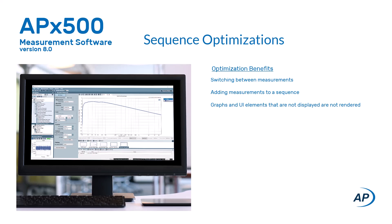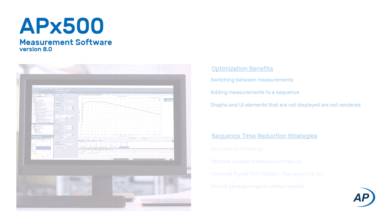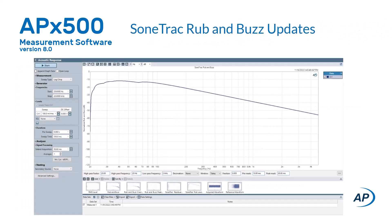Additionally, report data, other graphs, and UI elements that are not visible are not rendered, thereby reducing measurement time. By reducing the number of UI elements displayed — like minimizing the film strip and removing unused measurement results — and excluding non-essential elements from measurements, like unchecking signal path setup in a sequence, measurement times can be significantly reduced.